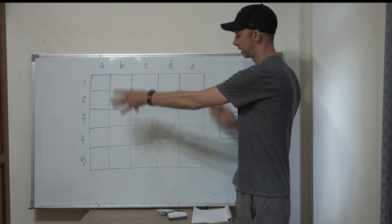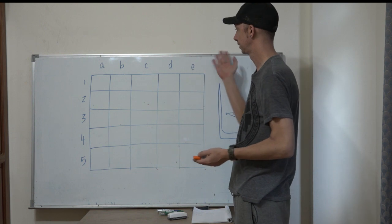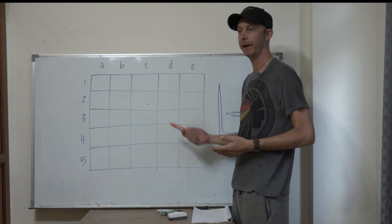I draw a grid on the whiteboard, and it can be however big you want it to be. It could be six, seven, eight by eight, but I like to use five by five.